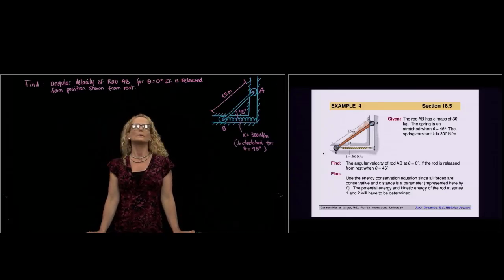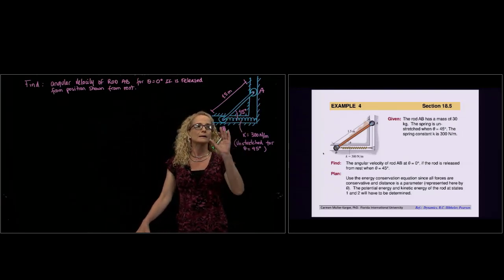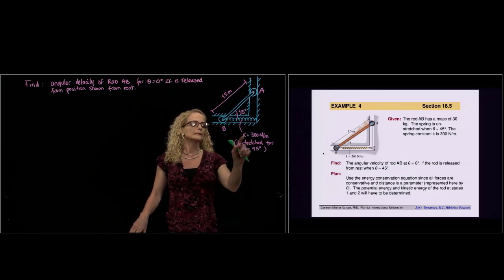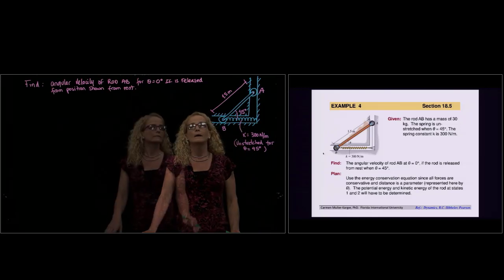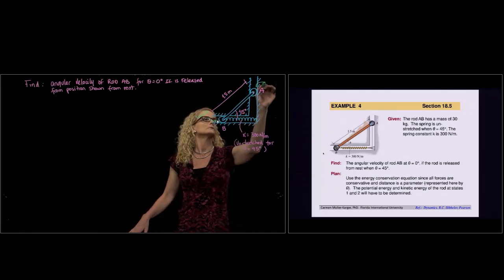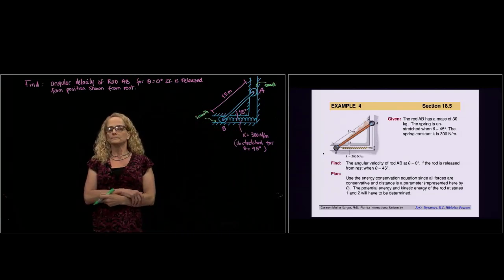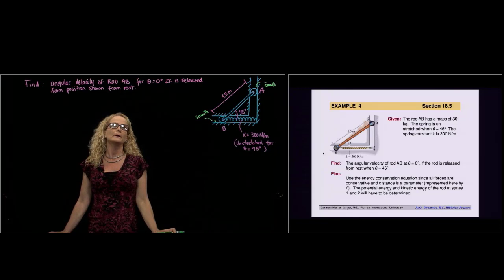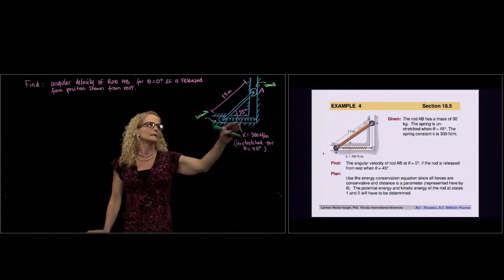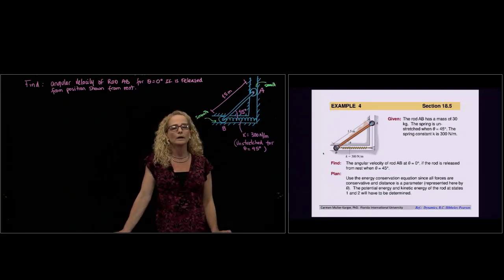This is example number four from section 18.5. We have a rod AB that is at rest in the position shown, and the spring is unstretched for that position as well. It has a smooth surface all along, so we don't have friction. We are being asked to find the angular velocity of rod AB for theta equals zero — when the bar has rotated 45 degrees and is at a horizontal position, released from rest.